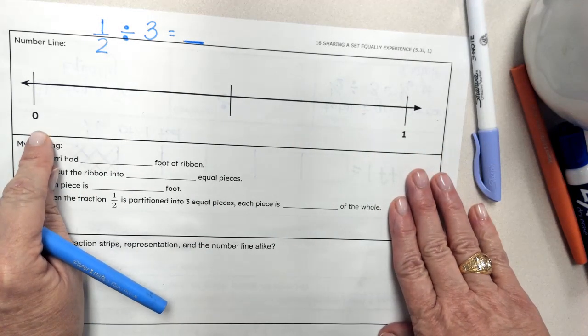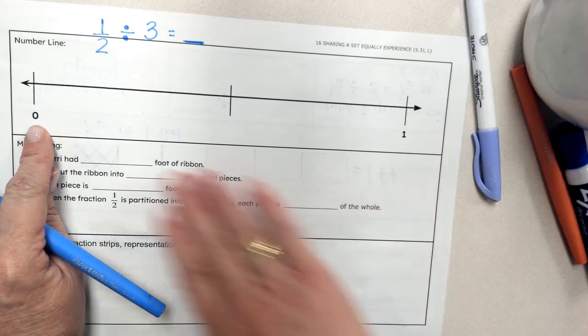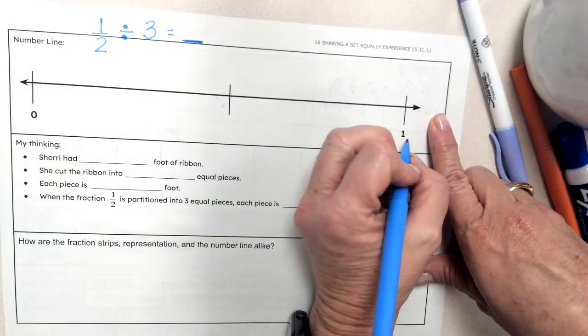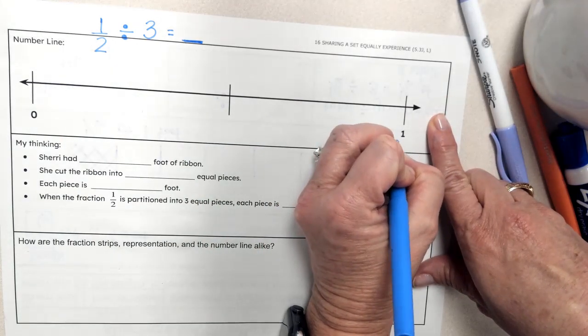So our number line, when I look at it, it starts with zero. It's going to go to the whole, to the number one, and so this number one represents one foot.